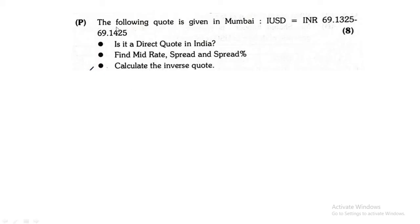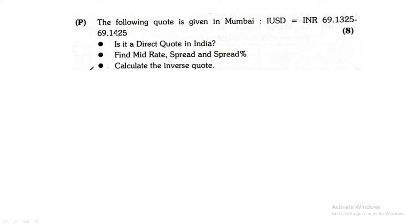The first question was question number 2P, where it was given that the following quote is given in Mumbai — 1 USD is equal to INR 69.1325 and 69.1425. The question is: is it a direct quote in India? The rule is, whichever country's currency has 1 unit, that is a foreign currency, and the opposite will become your home currency. So therefore, it is a direct quote in India.